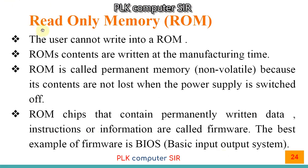Another type of main memory is ROM. There are two main memories: RAM and ROM. Cache memory also comes under primary memory. Read-Only Memory — ROM. The user cannot write into ROM; that is why it is called read-only memory. Writing is not possible by the user. ROM's contents are written at manufacturing time by the manufacturer. ROM is called permanent memory or non-volatile memory because its contents are not lost when the power supply is switched off. ROM chips that contain permanently written data, instructions, or information are called firmware.